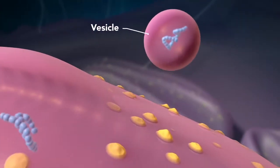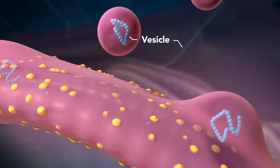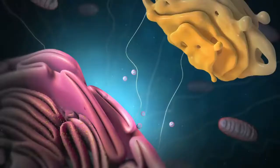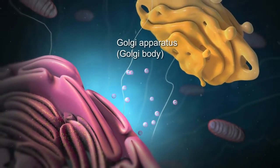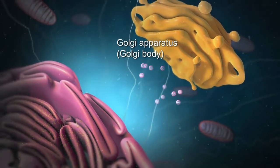Proteins and other materials emerge from the endoplasmic reticulum in small vesicles, where the Golgi apparatus, sometimes called the Golgi body, receives them.